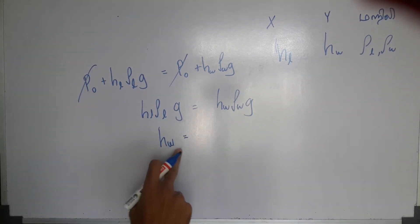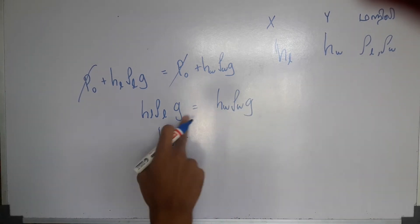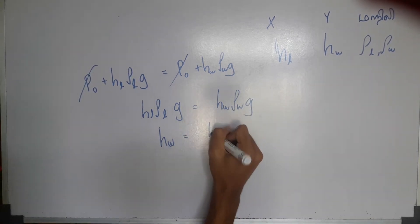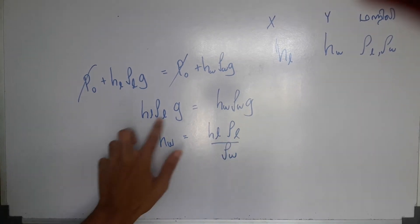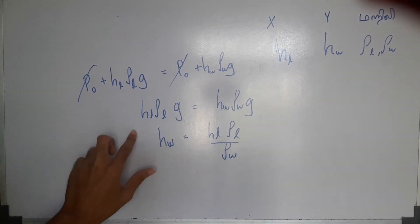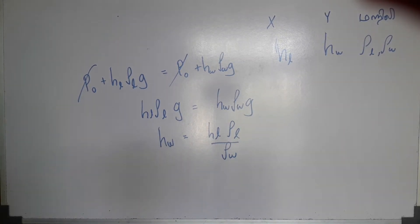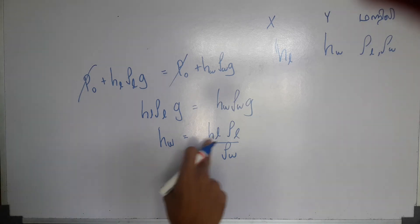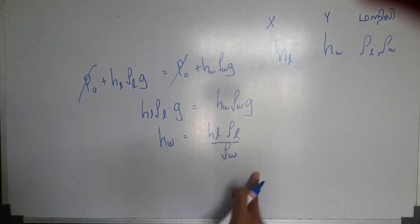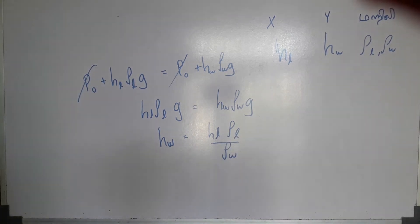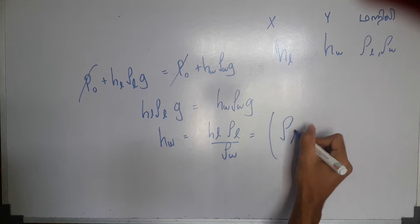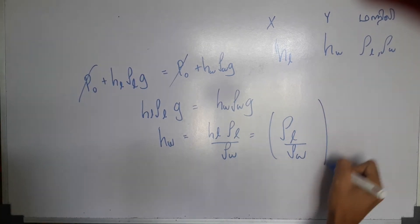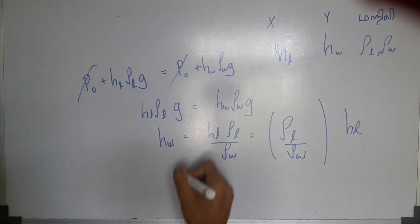HW. Rho 1 G. G and G are cancelled. So this is how we put it. HL. Rho S over Rho W. So we put HW. Then we put X on. So this is Rho L over Rho W into HL. So here is Y.